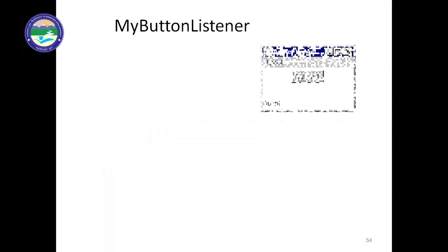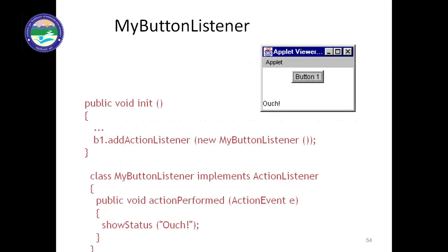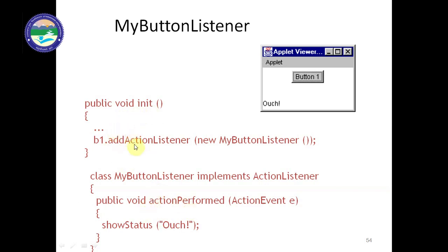Now coming to the program — this is a simple example. This is the syntax for a button: we have button b1, a single button defined here. When we write the init function, inside it we write 'b.addActionListener' and inside the argument we write 'new MyButtonListener'. This MyButtonListener is the defined class implemented by ActionListener, and inside it we write the actionPerformed function.